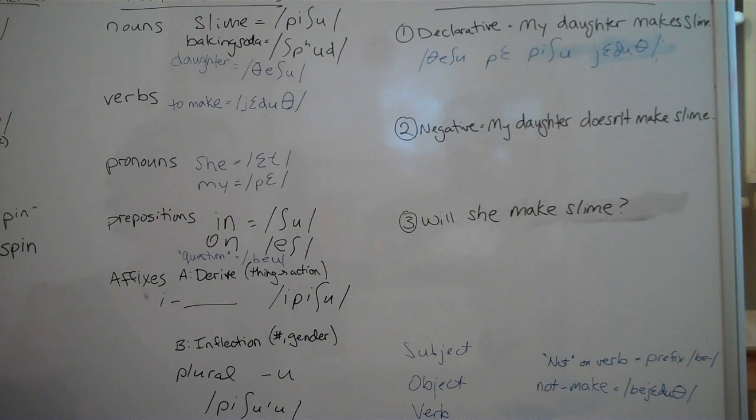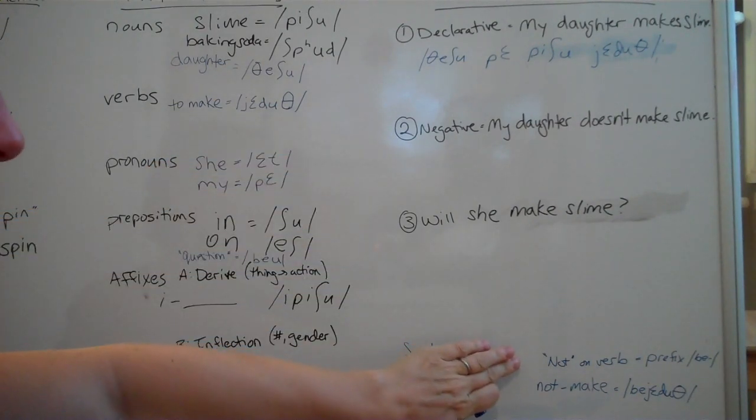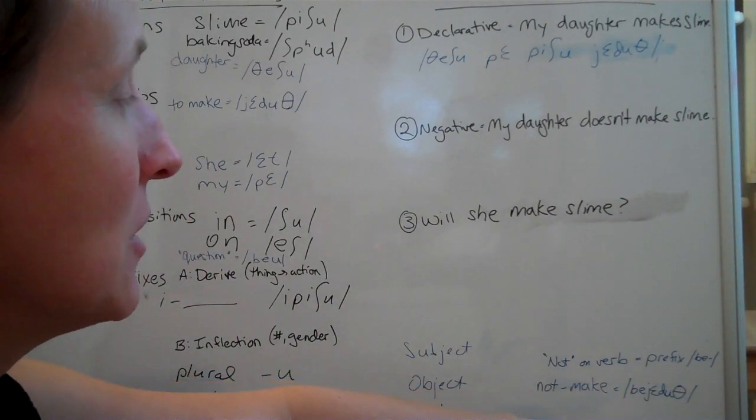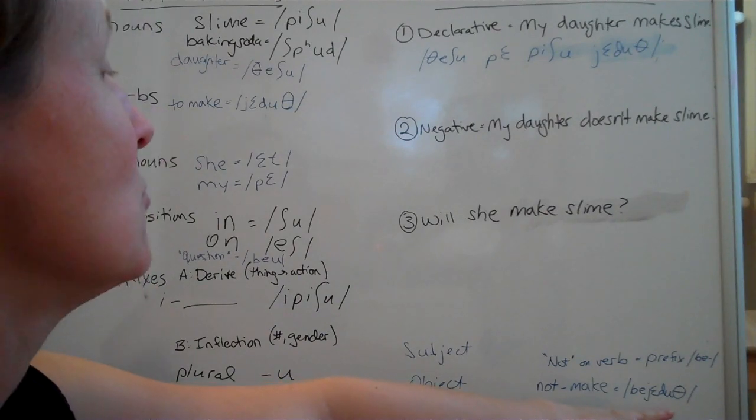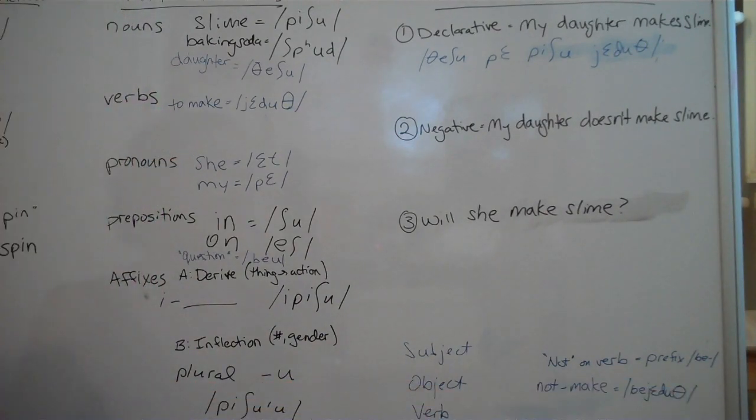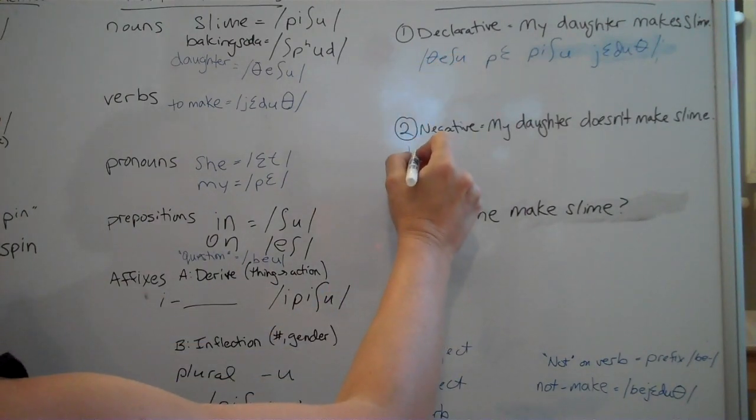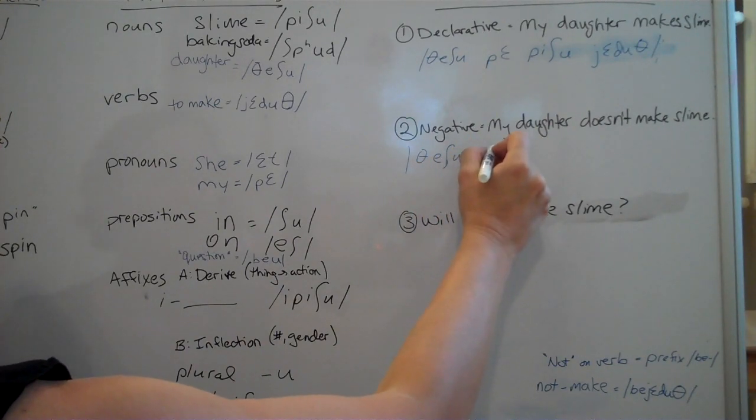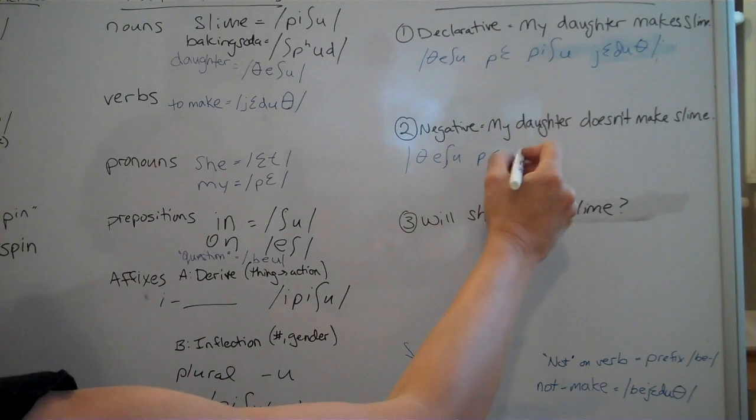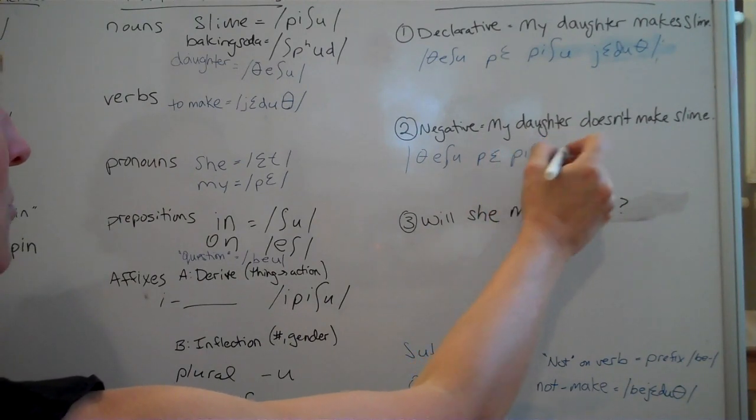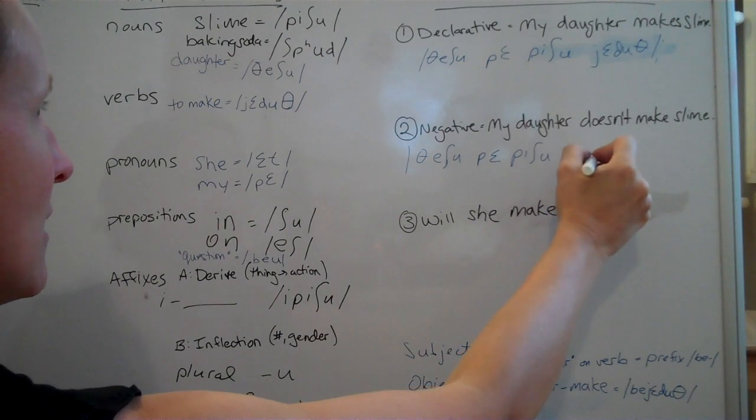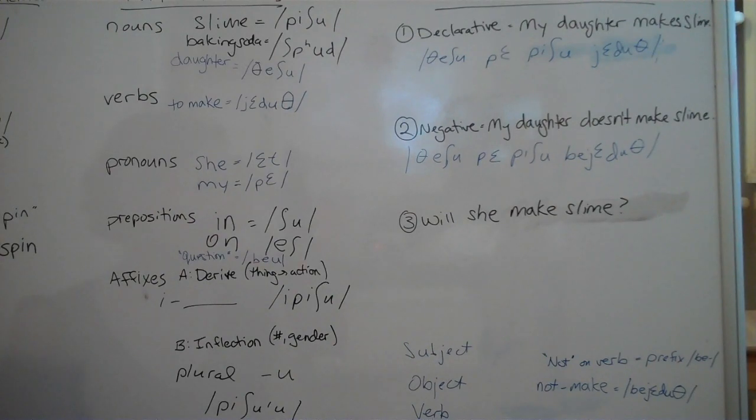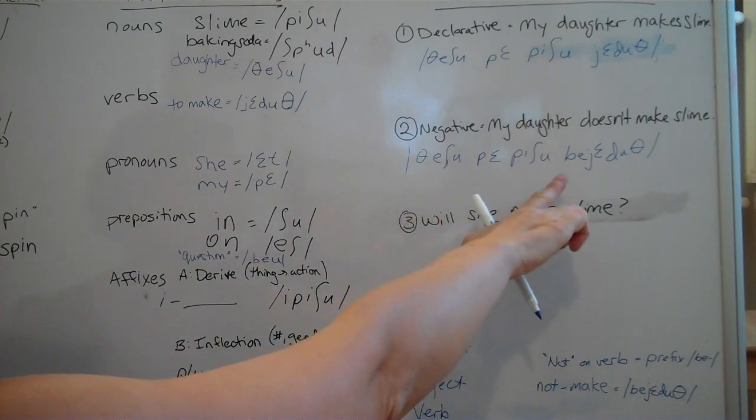Now we need to make it negative. So, my rule for turning something into a negative is to put on a prefix of be. So I will add be to be jeduth. Be jeduth means not make. So, I rewrite my sentence, Feishu, Pe, Peishu, be jeduth. My daughter doesn't make slime. Feishu, Pe, Peishu, be jeduth.